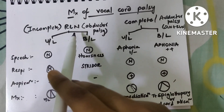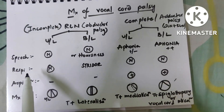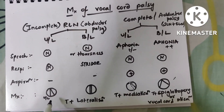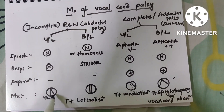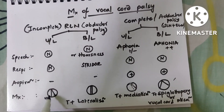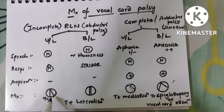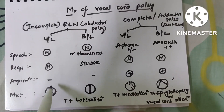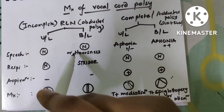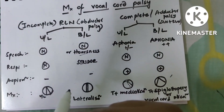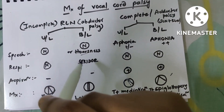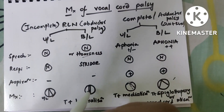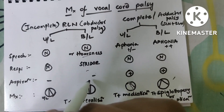In unilateral RLN palsy, speech is normal and respiration is also normal because only one side is affected. One side has abduction while the other side does not, but a compensation mechanism manages this. There is no aspiration in these patients. In bilateral recurrent laryngeal nerve palsy, speech is normal with slight hoarseness because both cords are approximated — this causes stridor, with no aspiration.